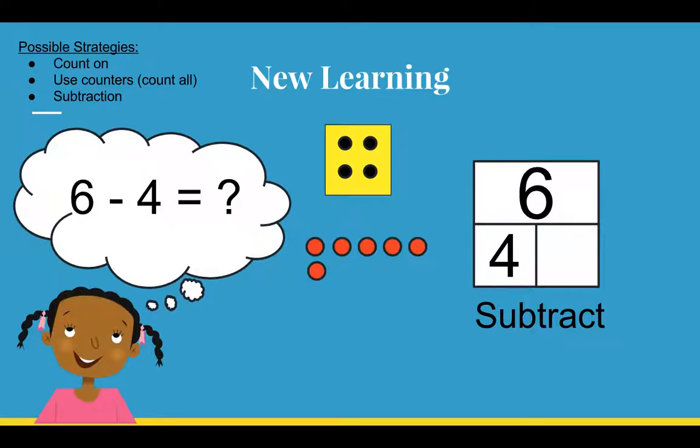As I'm using subtraction, I'm thinking I'm going to take my whole, which is 6, I'm going to take away or subtract the part that I know, which is 4, and I need to figure out what that missing part is. So 6 minus 4 is, I'm not sure,